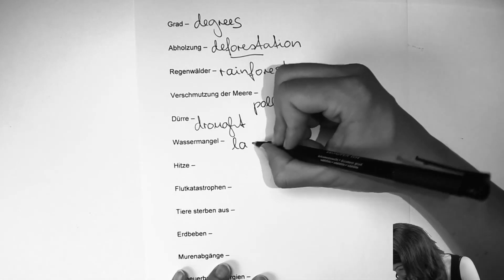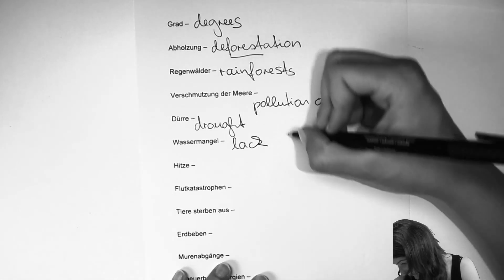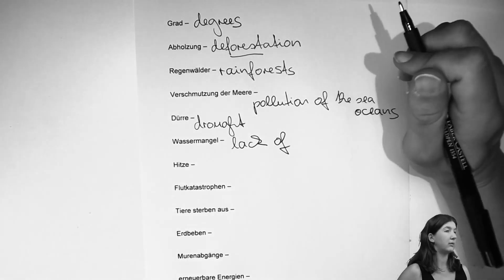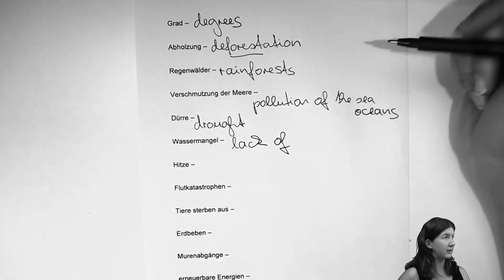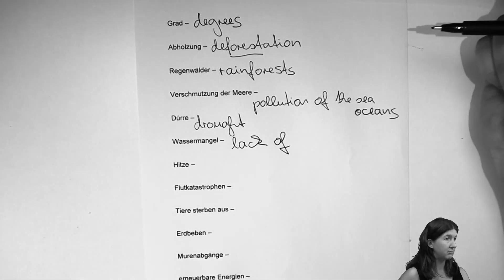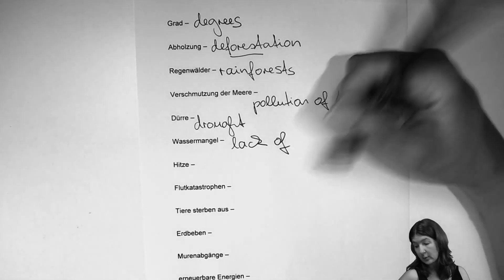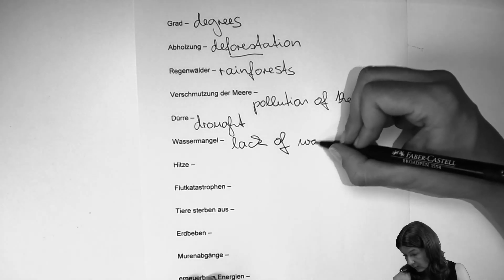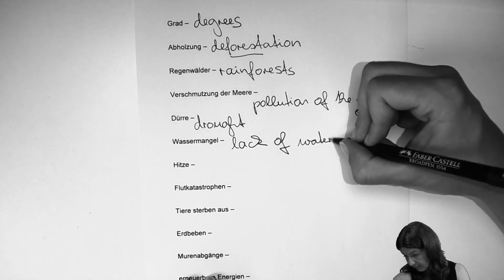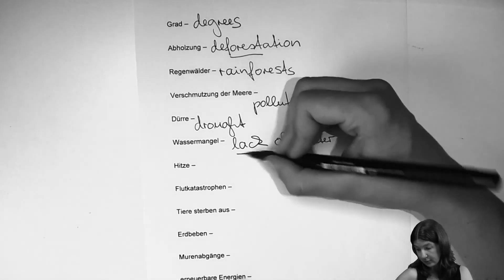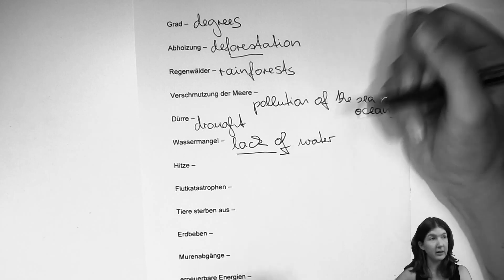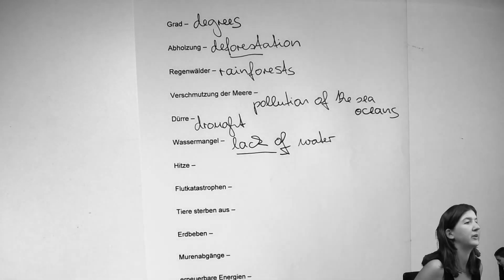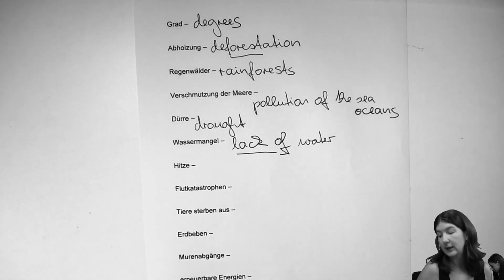'Wassermangel' — the 'Mangel' part is probably the most important. The English is: lack of water. 'The lack of' covers whatever you do not have — you can use the word 'lack' for many different things.